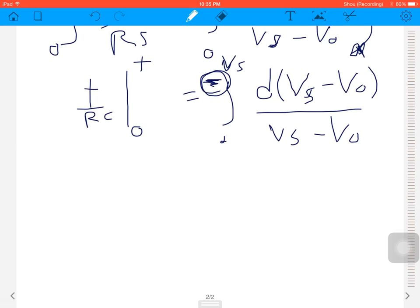Next step: on the left-hand side we get t divided by RC equals minus log of VS minus V out, like this, from 0 to V out.